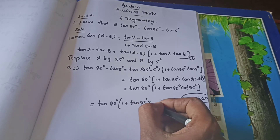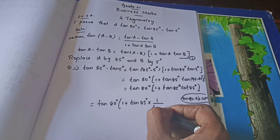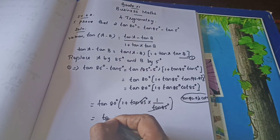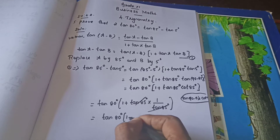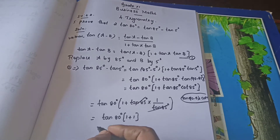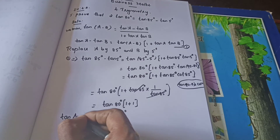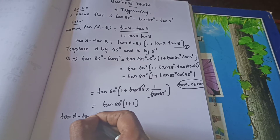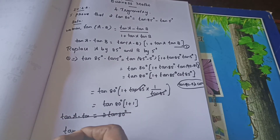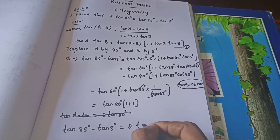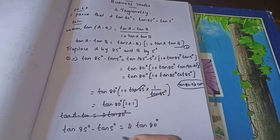How will you write cot as tan? It is 1 by tan. So 1 by tan 85° — these two terms get cancelled. So tan 80° into 1 plus 1. So how much you will get? 2 tan 80°. This only you needed to prove. So tan 85° minus tan 5° equals 2 tan 80°. Hence proved.